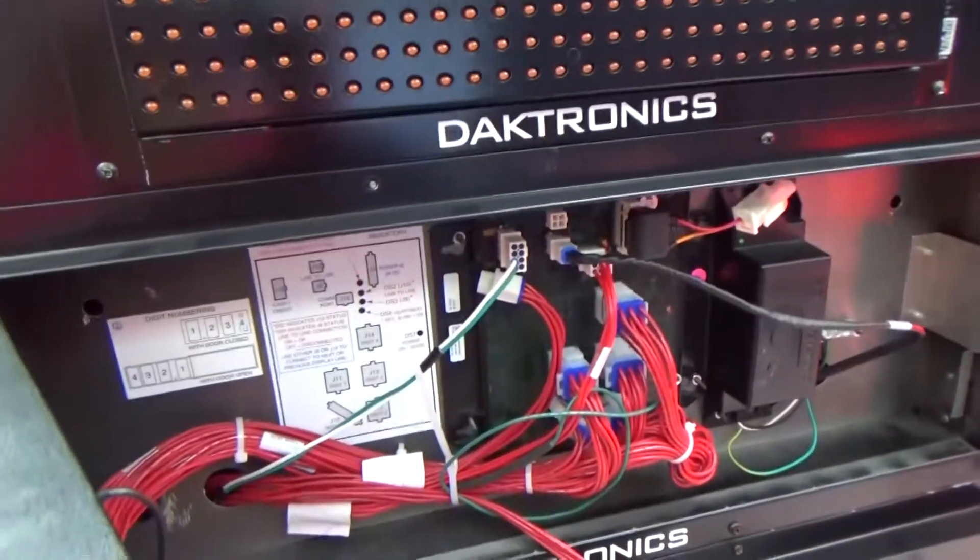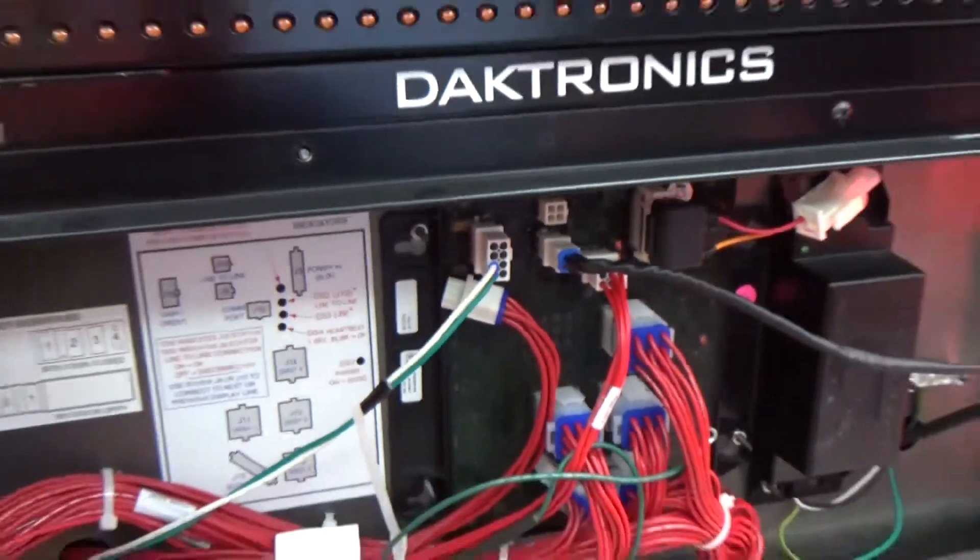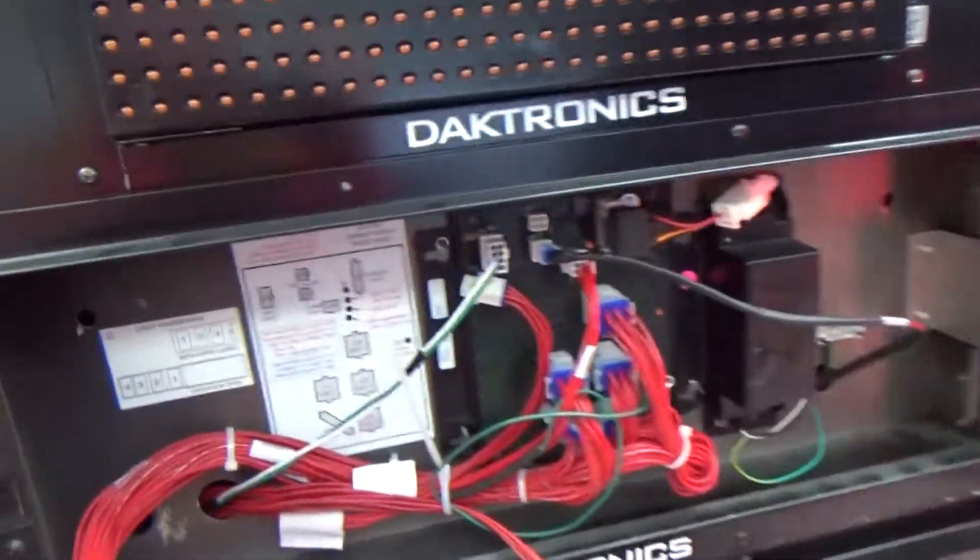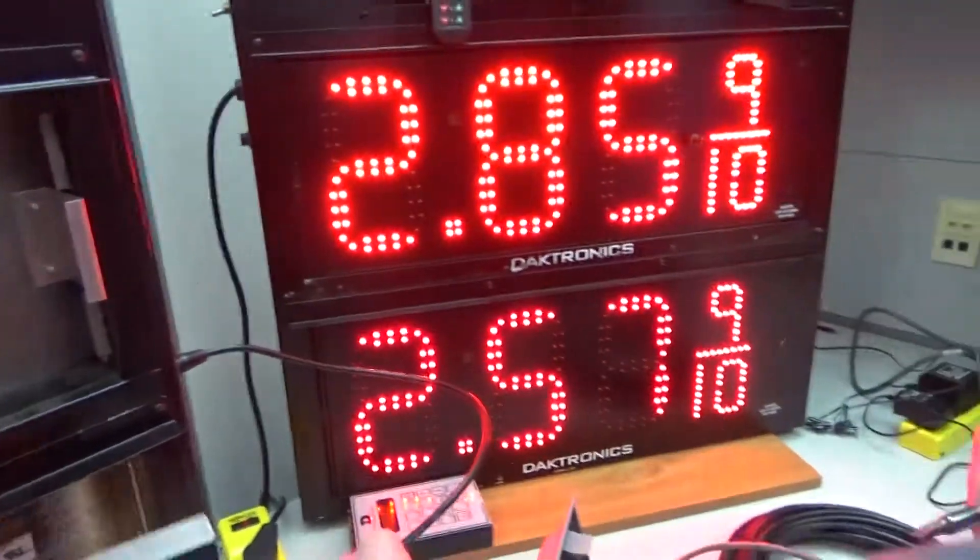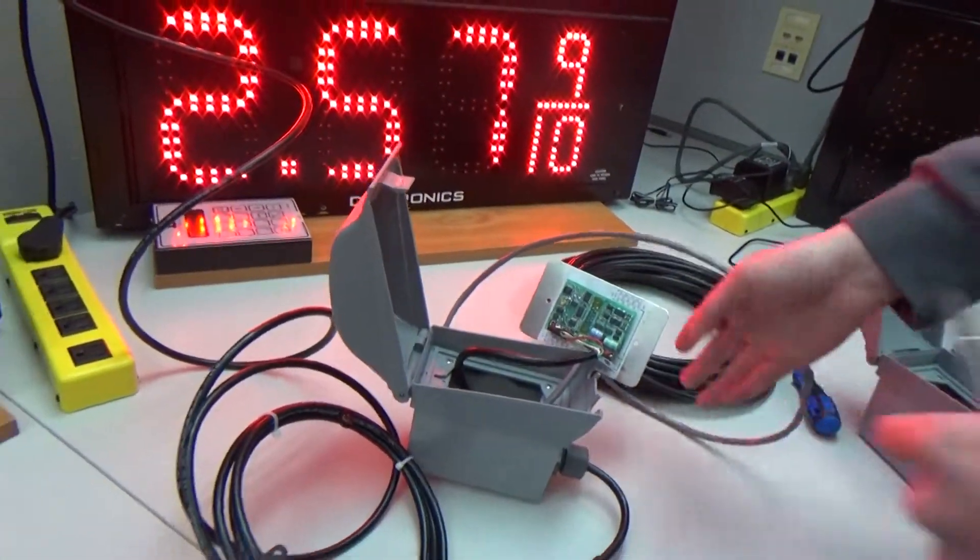Next, the communication cables will be connected to each display at the pylon. There will be a second quick connect coming from the display going to the second J-Box at the pylon.